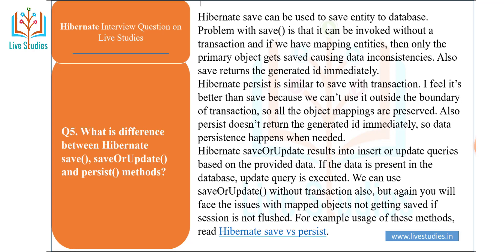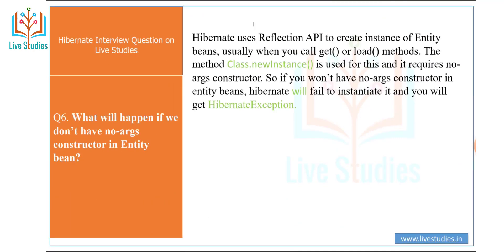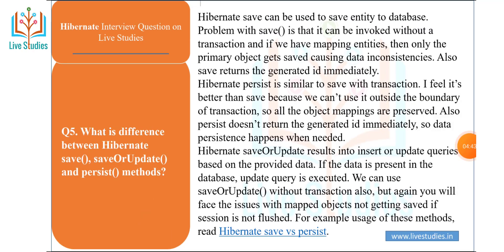Another question: what is the difference between Hibernate save(), saveOrUpdate(), and persist() methods? Hibernate save() can be used to save an entity to the database. The problem with save() is that it can be invoked without a transaction, and if we have mapping entities, then only the primary object gets saved, causing data inconsistency. Also, save() returns the generated ID immediately.